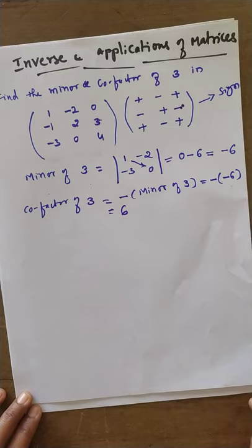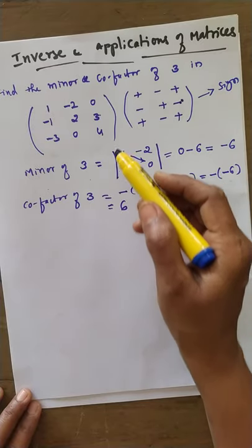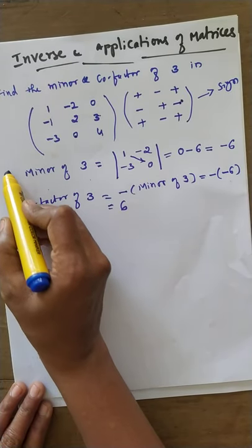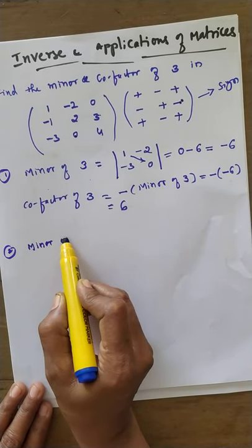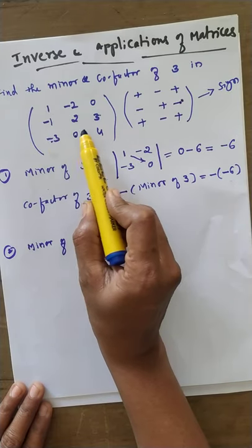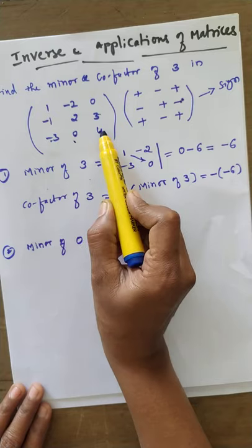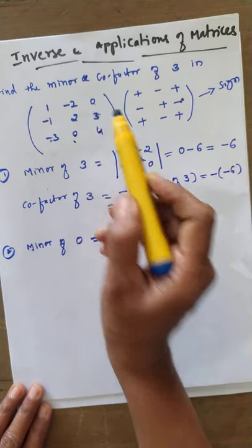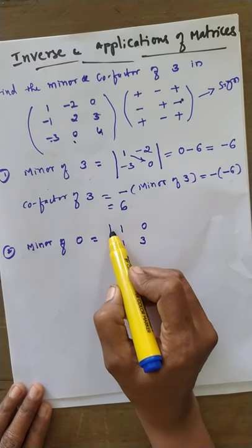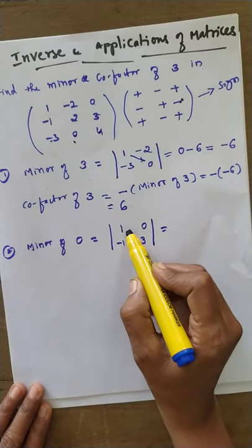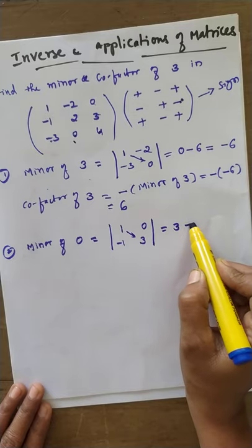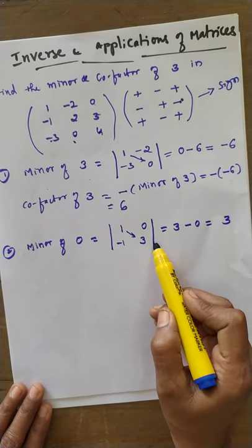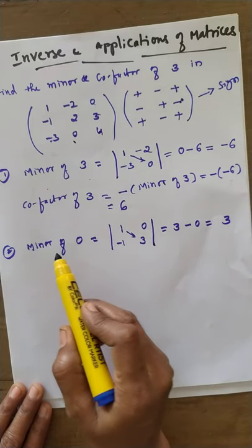Similarly, you can find the minor of any element. For example, minor of 0: that 0 is in the third row, second column. After deleting the third row and second column, we get the matrix [1, 0; -1, 3]. The determinant is 1×3 − 0×(−1) = 3 − 0 = 3. This is the minor of 0.